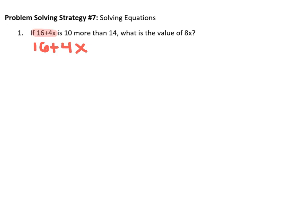The 'is' indicates equals, so I can say it's equal to. And then 10 more than 14 indicates 10 plus 14, which we know is equal to 24.